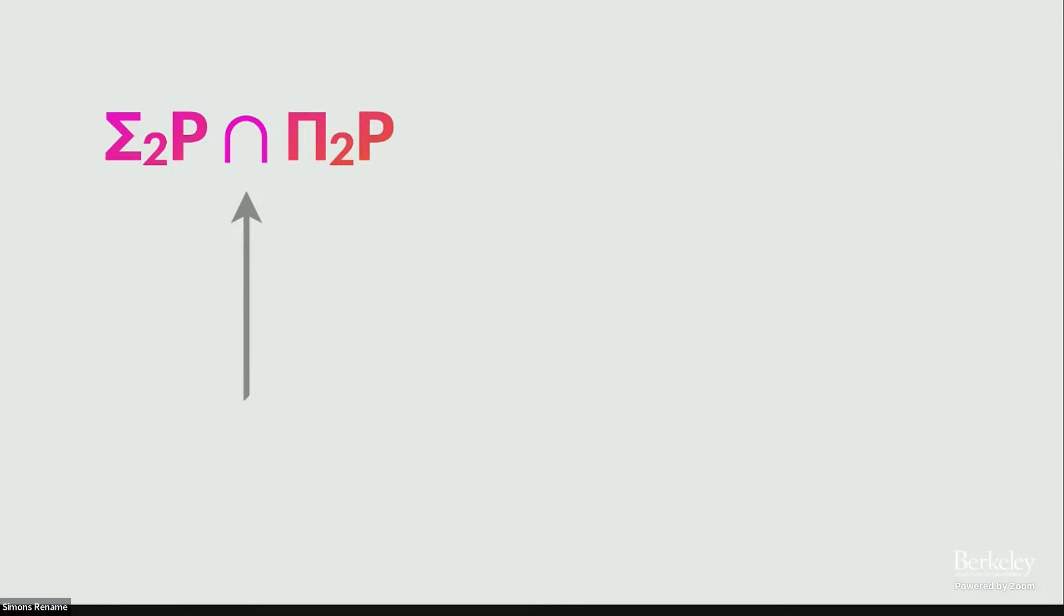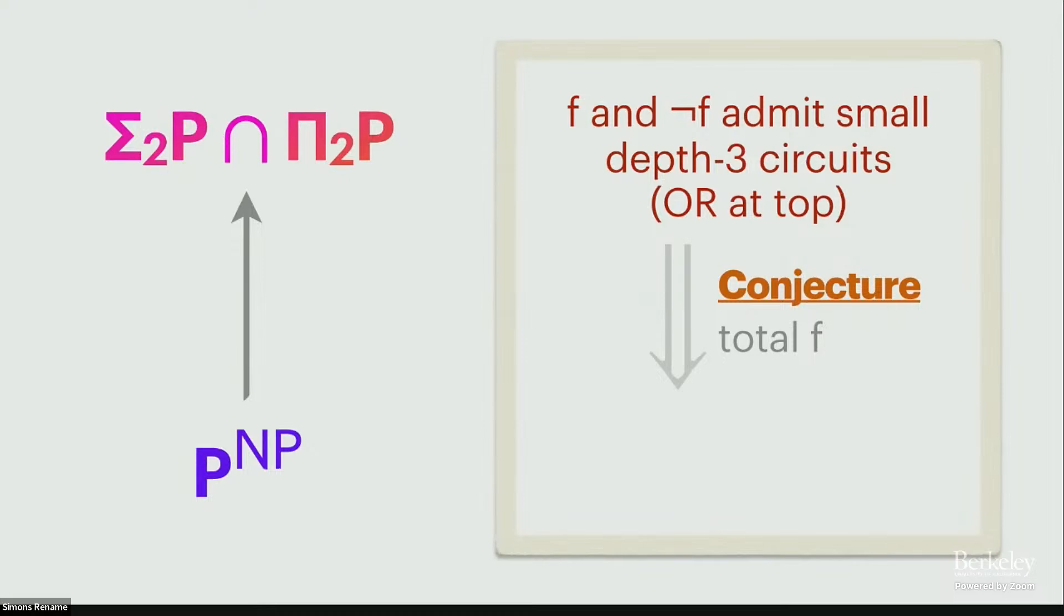Okay, so what does this pattern mean? Suppose I have a total Boolean function, and both that function and its complement admit small depth-three circuits. So OR at the top and I suppose polylog padding at the bottom. So again, now there's a new conjecture. If you're computing a total Boolean function, it should collapse. So that function should admit also an efficient—what is the circuit analog of P to the NP? I wonder if people know this. Decision list. Say again. Decision list. That's right. Decision list.